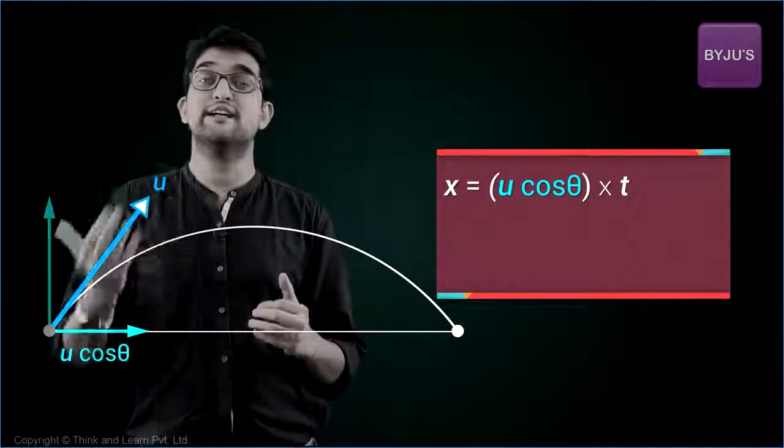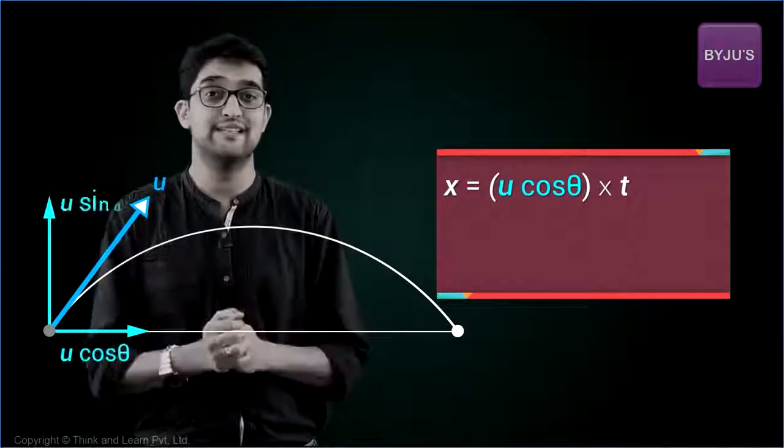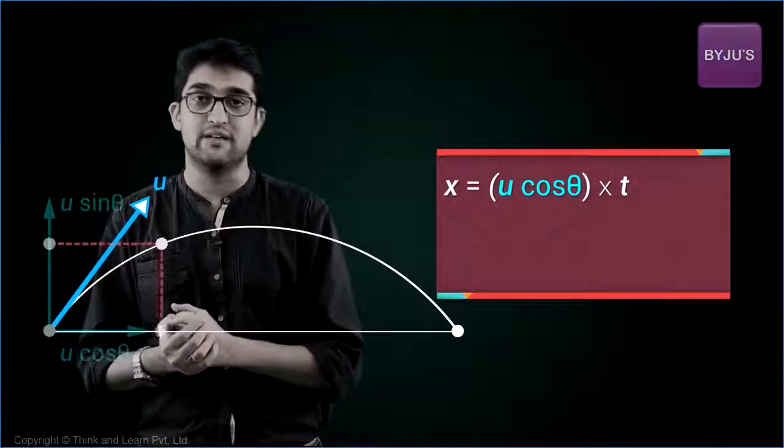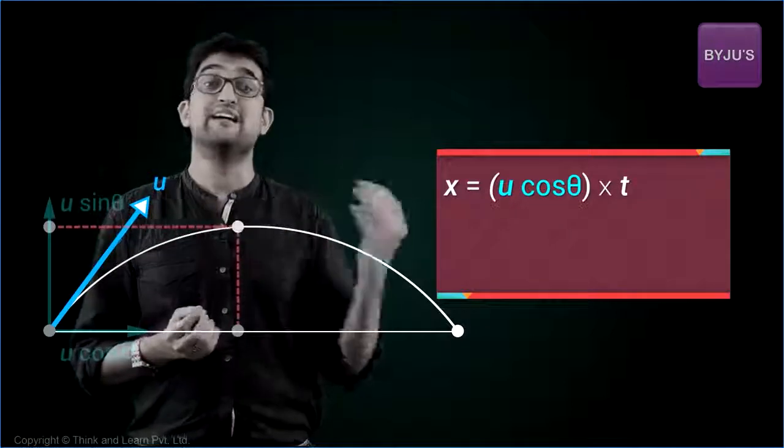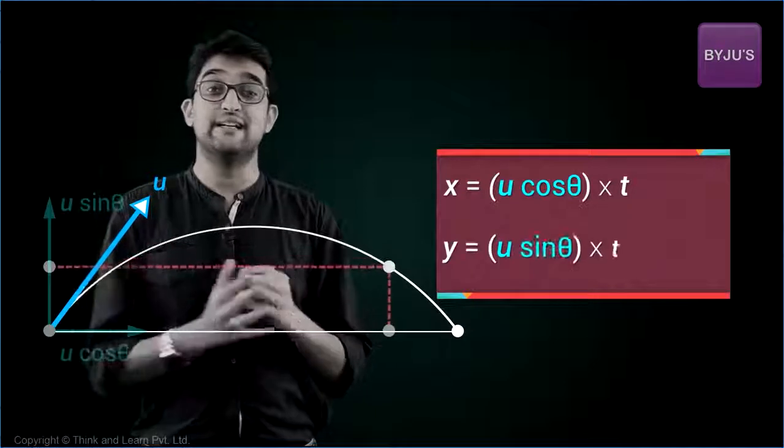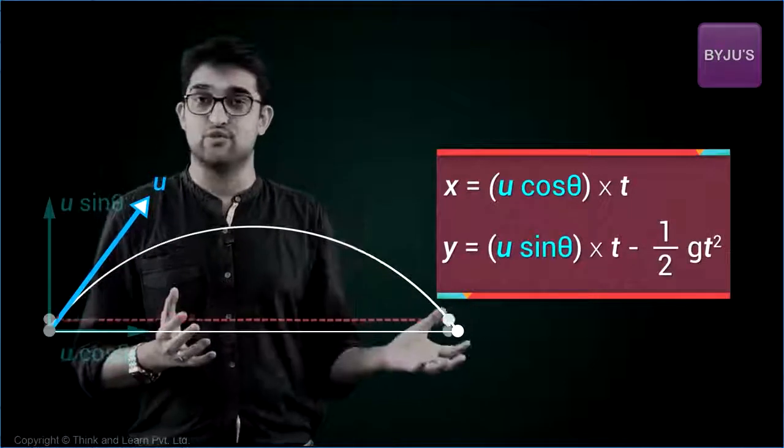What happens in the vertical direction? Initial velocity is u sine theta. Initially, it's a decelerated motion because gravity reduces the speed. Once it reaches maximum height, it becomes an accelerated motion. So the expression will be u sine theta t minus half gt square. That's it.